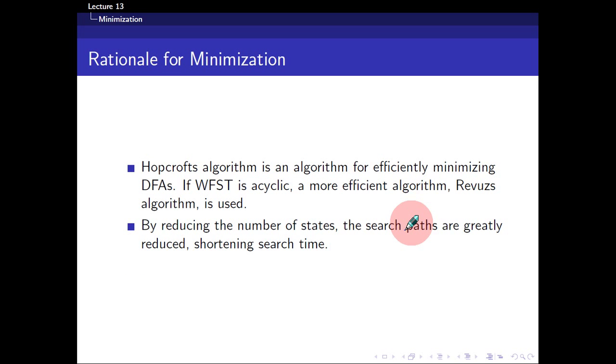The most popular minimization algorithm is known as Hopcroft's algorithm. This is a very efficient minimization algorithm for a deterministic finite automaton. But if you have an acyclic transducer, you can actually use the Revuz algorithm, which is a more efficient algorithm for acyclic transducers.